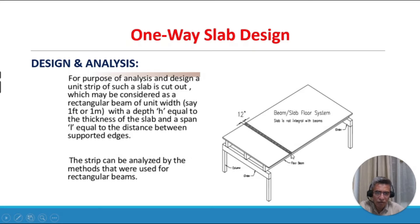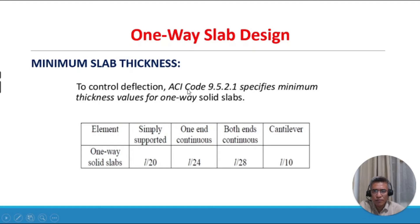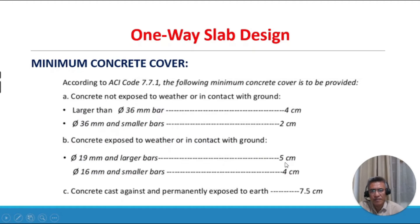For minimum slab thickness to control deflection, ACI Code 9.5.2.1 specifies minimum thickness values for one-way solid slabs: L/20 for simply supported, L/24 for one end continuous, L/28 for both ends continuous, and L/10 for cantilever. The strip is one foot, 12 inches, or one meter.